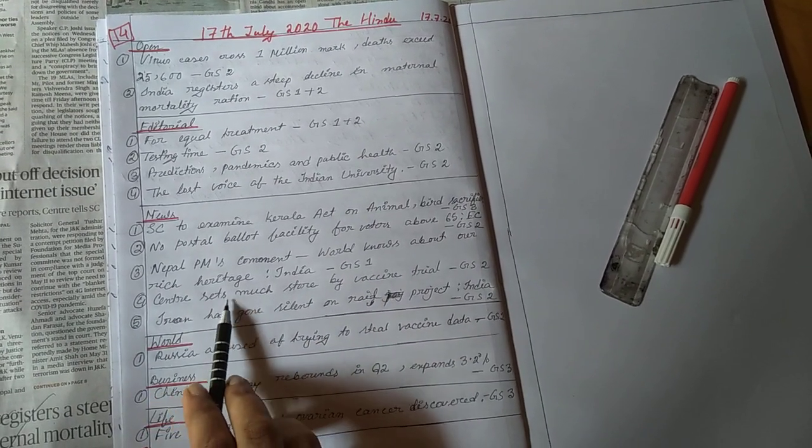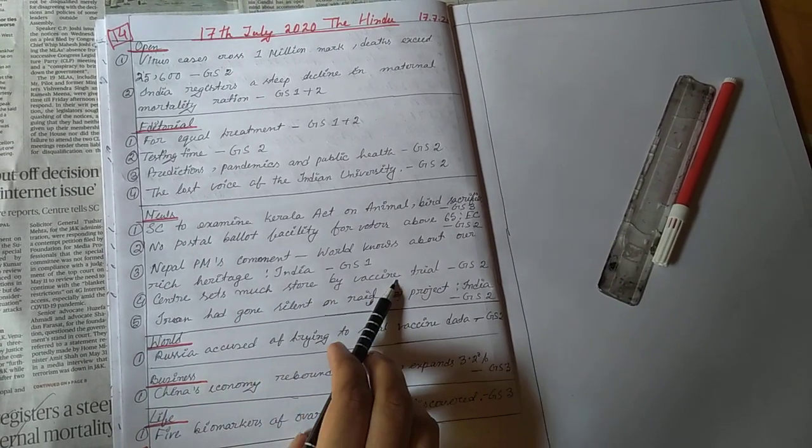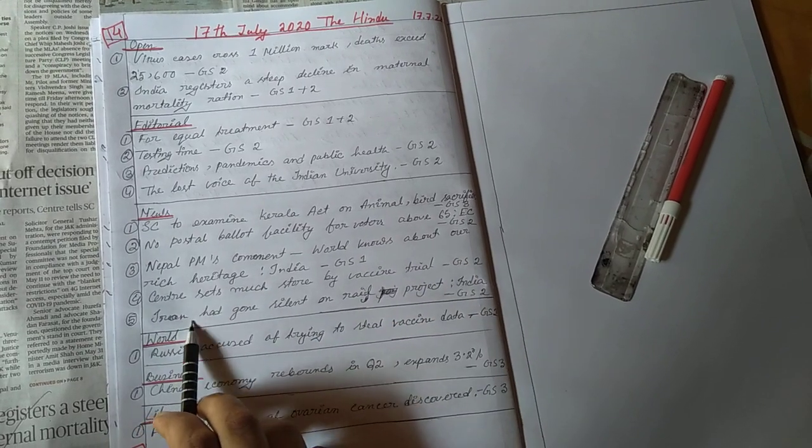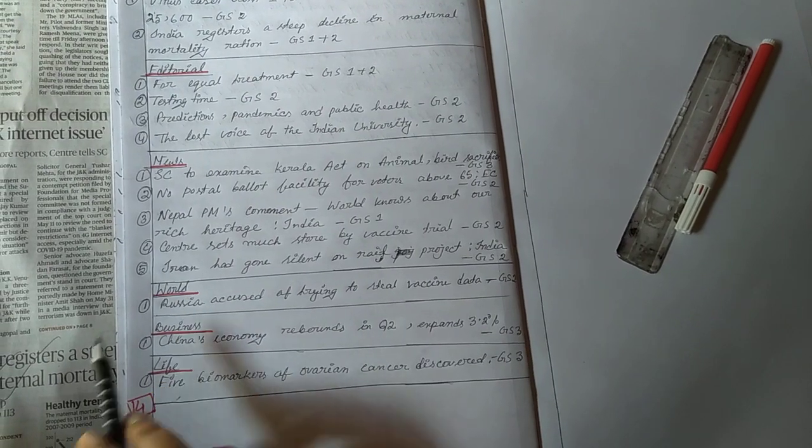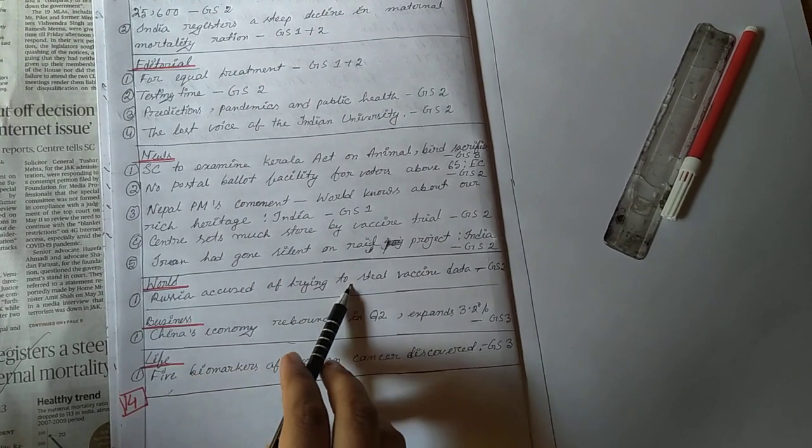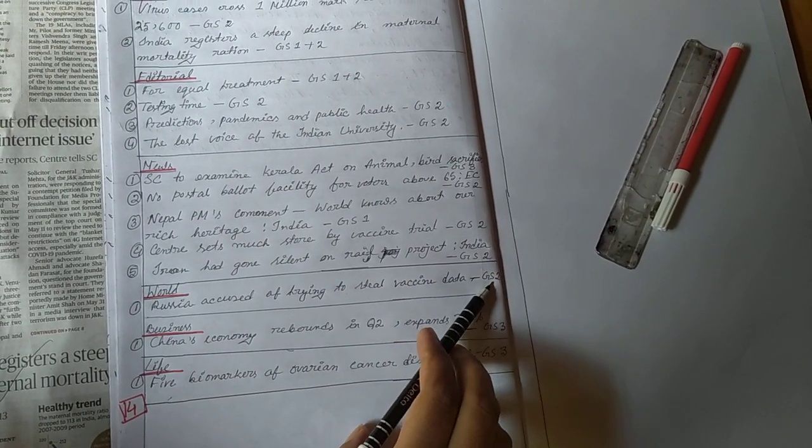Art and culture, Center said much store by vaccine trial, GS paper 2. Iran had gone silent on rail project, India, GS paper 2. Then come to the world page, Russia accused of trying to steal vaccine data, GS paper 2.